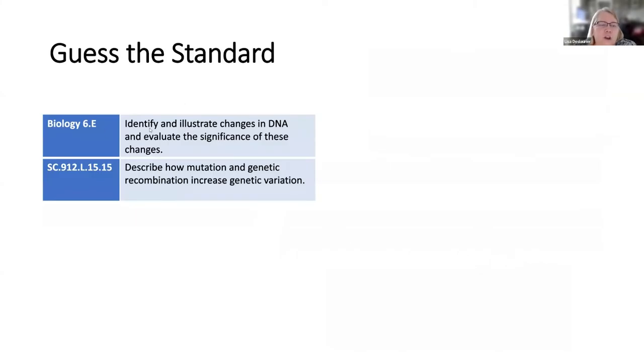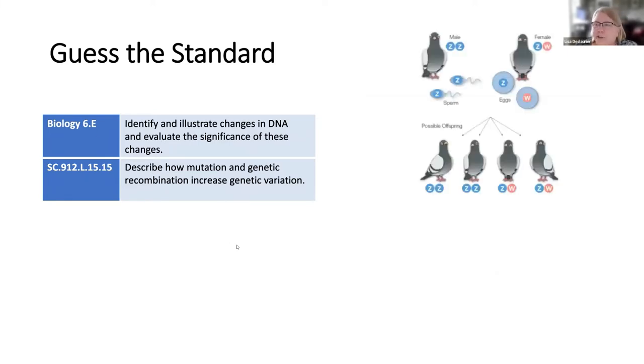And so it can show mutations. We have a TEKS in biology here in Texas and also a Florida standard. Birds are different than people when it comes to their sex chromosomes that, you know, that females, we have XX and XY and male. But we have Z's and W's in birds. So there's a pigeon in the example, but all birds work the same way, just like all people would work the same way. And so if both of your chromosomes are the same, you're male. If they're different, you're female.